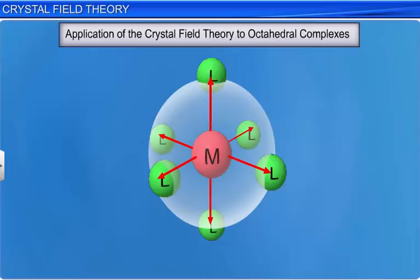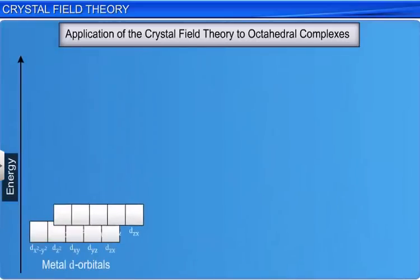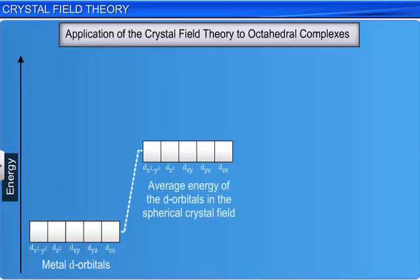At this stage, the energy of all the d-orbitals is raised by the same amount, that is, the five d-orbitals still remain degenerate. The average value of the energy of the d-orbitals at this stage is taken as zero and this is called the baricentre.